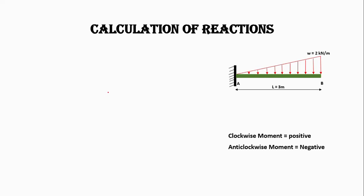Let's start the calculation of reaction forces. In the case of a cantilever beam or at a fixed support, we have three reactions: one is horizontal reaction Rx, one is vertical reaction Ra, and one is the moment acting on the support. We have considered this moment in the anti-clockwise direction because our loading bends this beam in the clockwise direction. To counter this moment, we consider the anti-clockwise moment at support A. Anti-clockwise movement will be taken as negative and clockwise as positive.